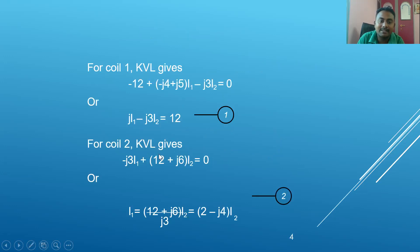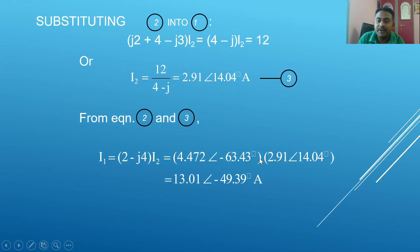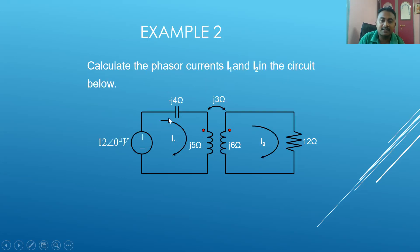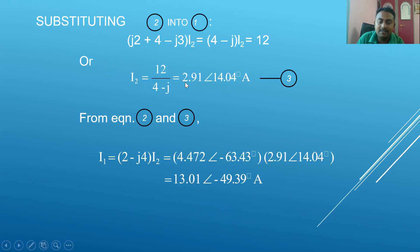For loop two, the total reactance is (12 + j6). Taking the mutual inductance with the opposite sign: −j3·i1. The key rule is: when writing the loop one equation, the mutual inductance j3 couples with i2; when writing the loop two equation, j3 couples with i1. Solving the two equations simultaneously gives i2 = 2.91∠14.04° A, and substituting back gives i1.